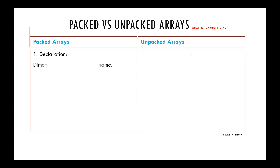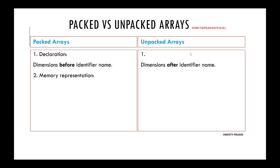The first point is with respect to declaration. In case of packed arrays, the dimensions are declared before the identifier name, whereas for unpacked arrays they are declared after. The keyword to remember is: before and after.